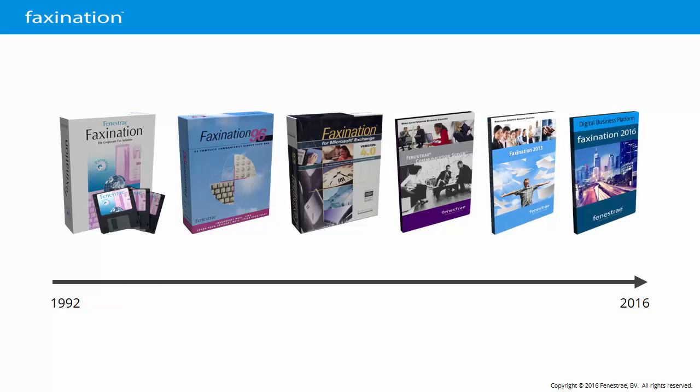Faxination was originally conceived as a fax-to-email gateway for Microsoft Mail, which means that it predates Microsoft Exchange, Active Directory, SharePoint, and even Windows NT. The very earliest releases shipped on floppy disk and ran on MS-DOS. This is at a time when the World Wide Web was in its infancy, and if you had internet access at all, it was through a dial-up modem. Now, fax is not exactly a growing market by any means, but some of the world's largest organizations still rely on it and consider it to be a mission-critical technology, so we continue to grow and innovate our product.